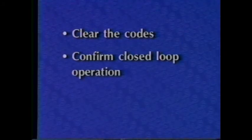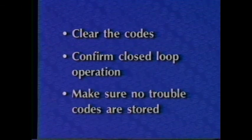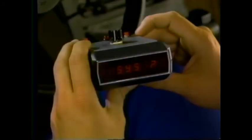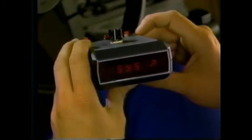After replacing the sensor, clear the codes, confirm closed loop operation, and make sure no trouble codes are stored. Remember you can check for trouble codes with the scan tool by pushing the mode button then number three. Now the only code that remains to be checked is code 63. However, since the intent of this program is to expose you to scan tools and their uses, let's use a different scan tool this time — the microprocessor scan tool.